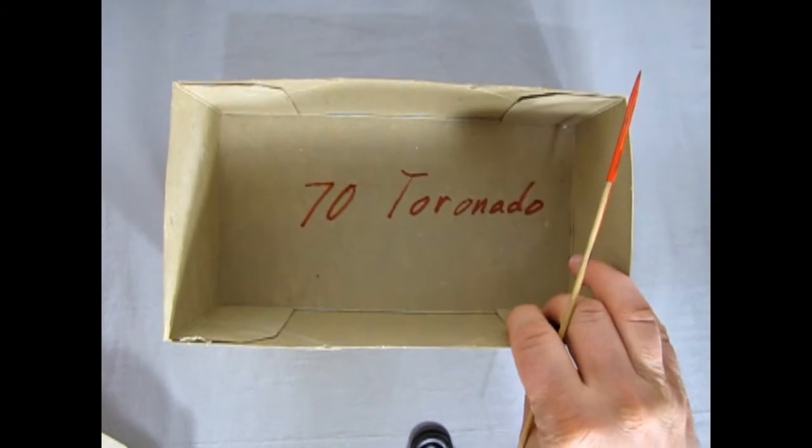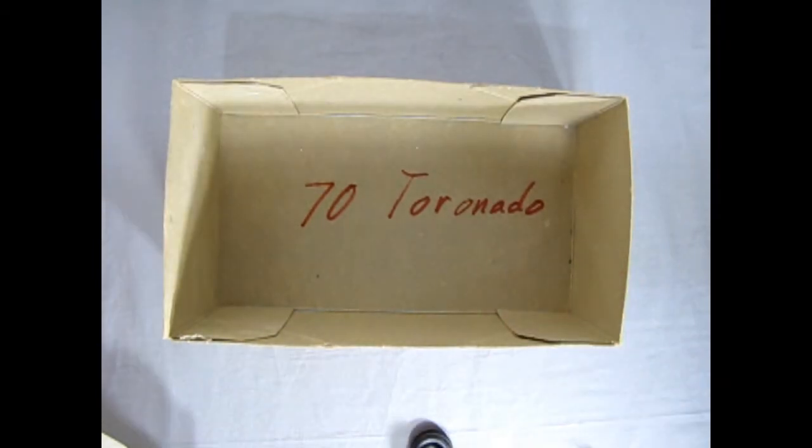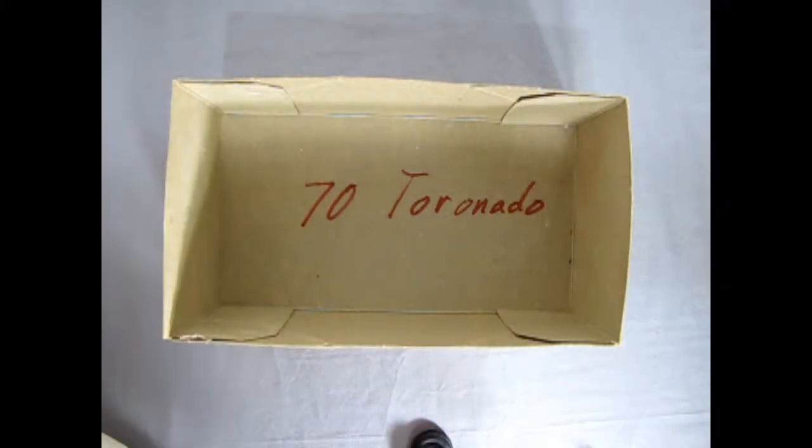Somebody was kind enough to take a big red sharpie in the bottom of the box and they wrote a secret message that we will have to try to figure out how to decode this thing. Now it says 70 Toronado, of course. All right, so I'll clear all this debris and rubble and rubbish out of the way and we'll take a look at those instructions.